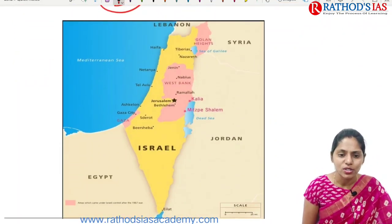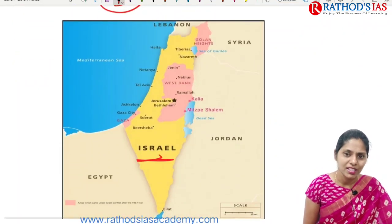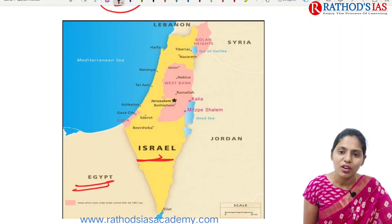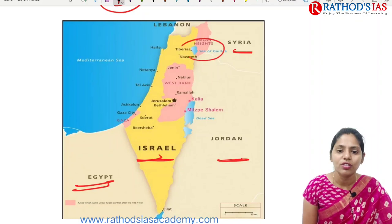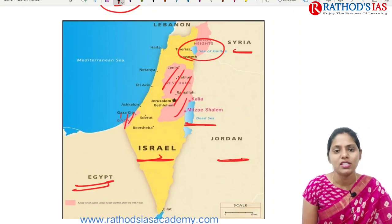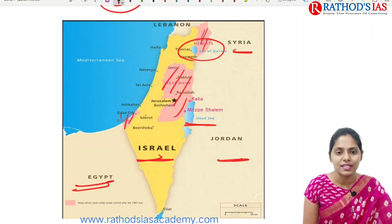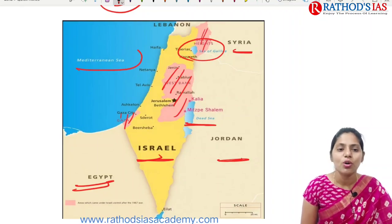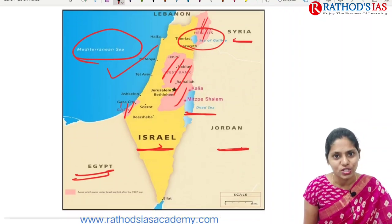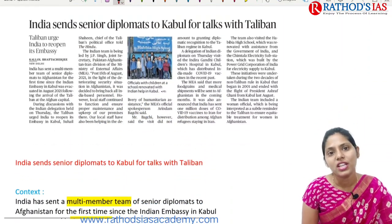Looking at the map of Israel: Israel is bordered by Egypt, Jordan, Syria, and shares a border with the Mediterranean Sea. The Sea of Galilee and Dead Sea are also visible. The red area on the map is Palestine.